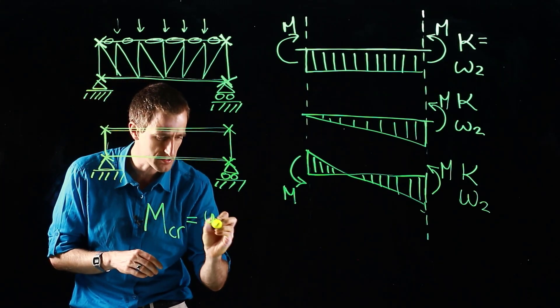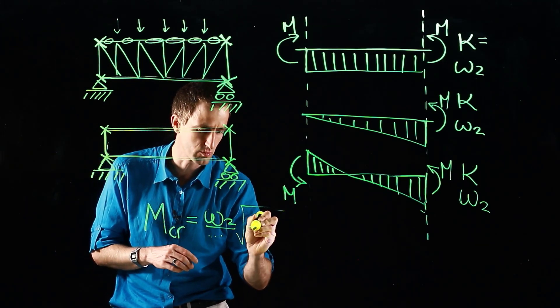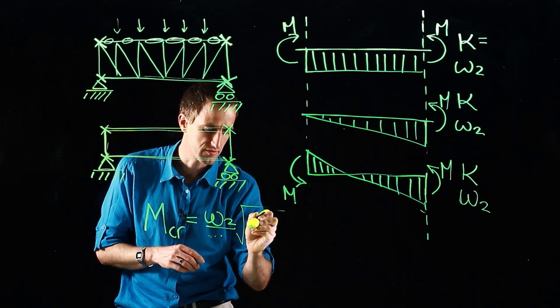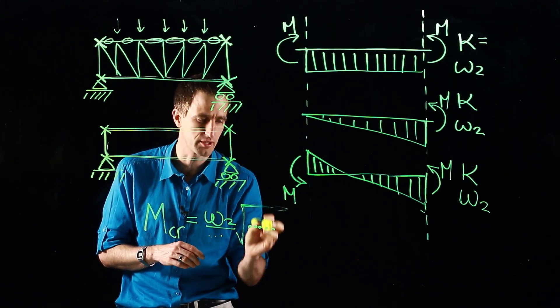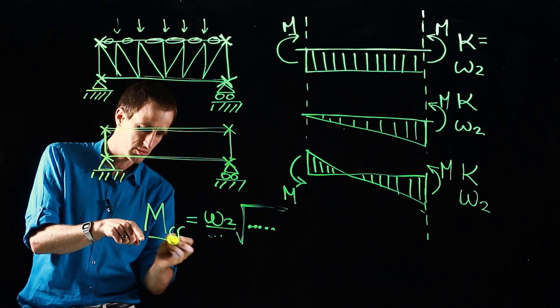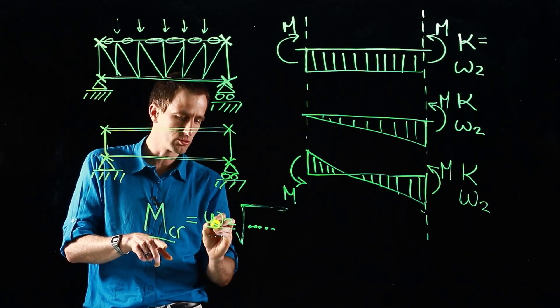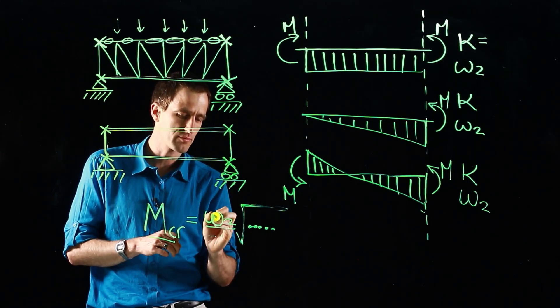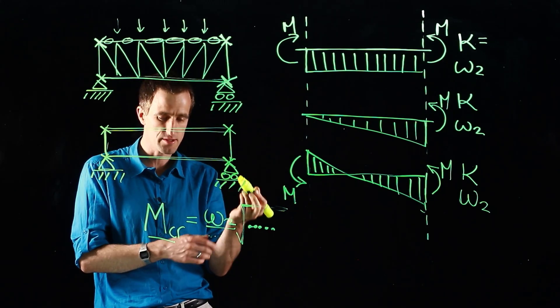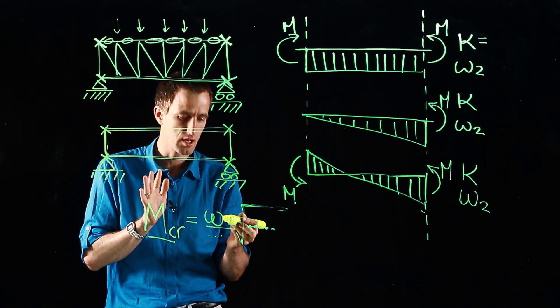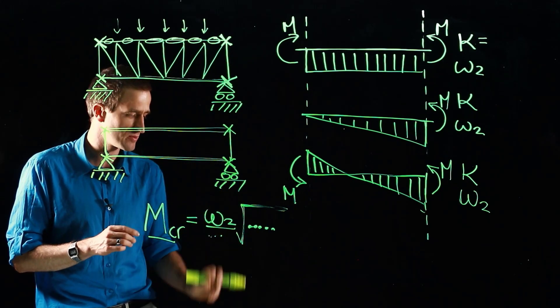And this beam has this omega-2 in front and then it's got a whole long equation with Saint-Venant and warping torsion in it. But just have a look: critical moment of resistance equals and it's directly proportional to this term called omega-2. So as omega-2 rises our elastic buckling resistance rises and omega-2 accounts for the shape of the bending moment diagram.